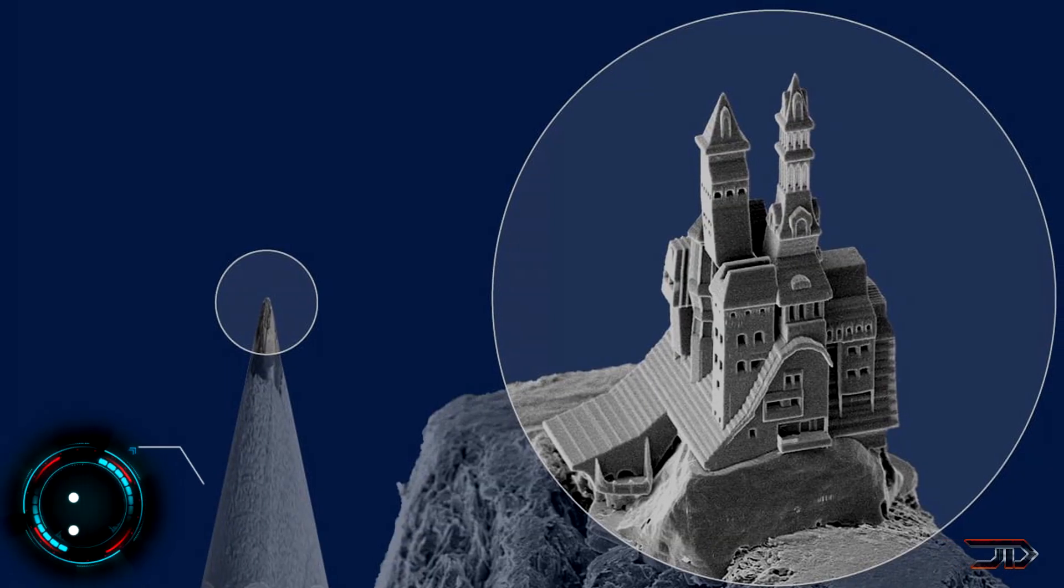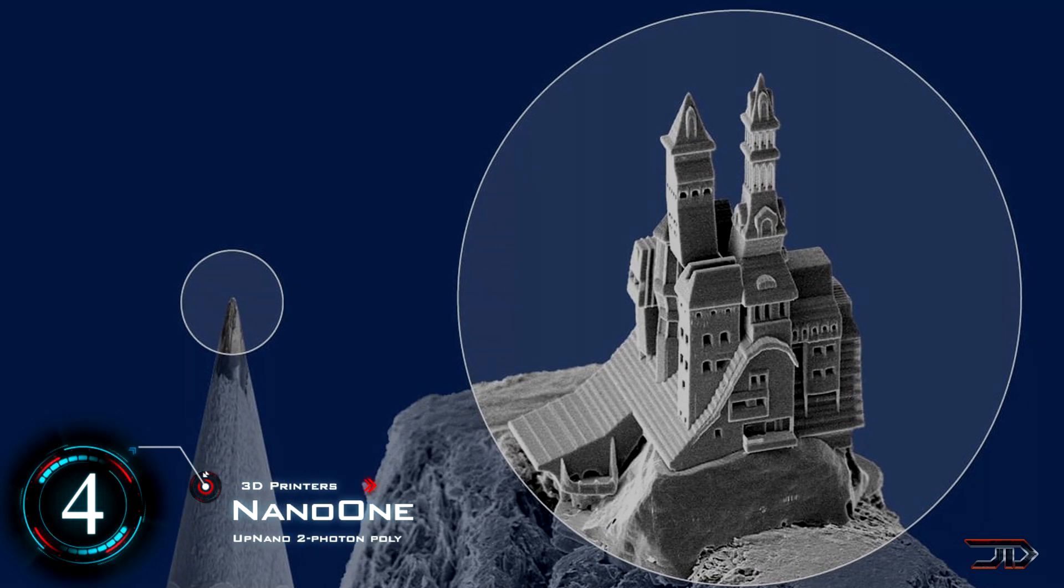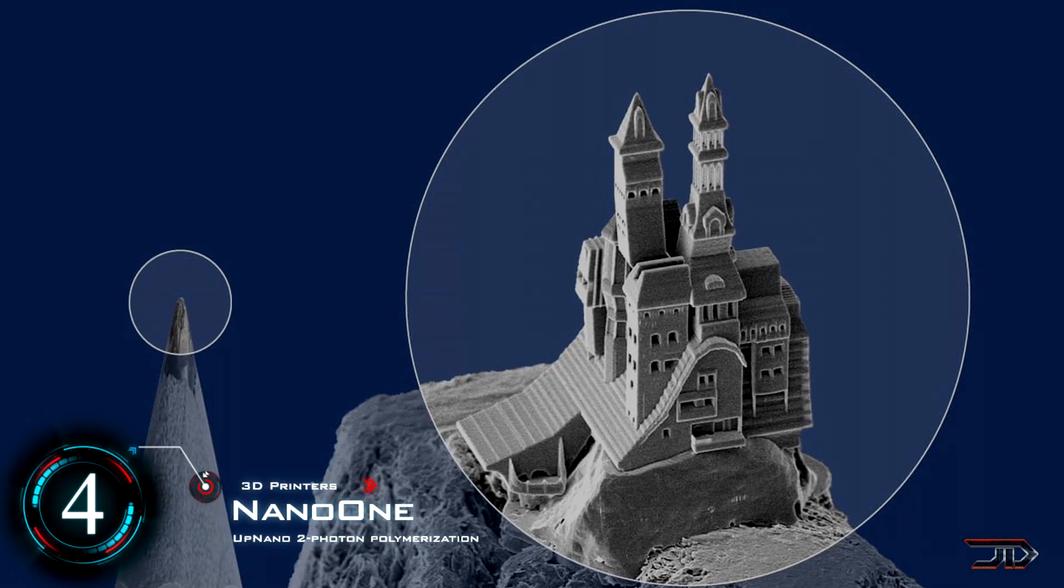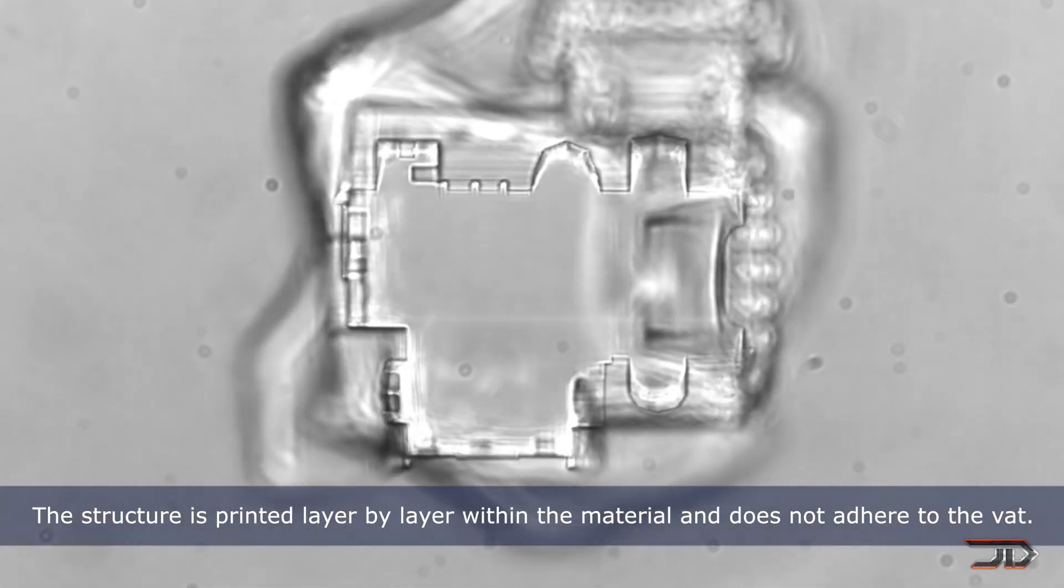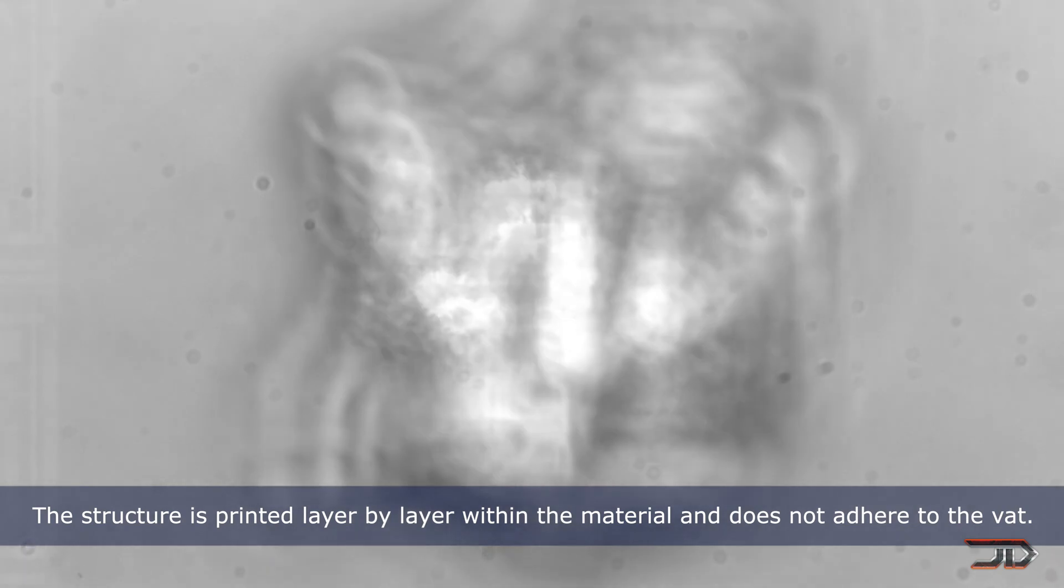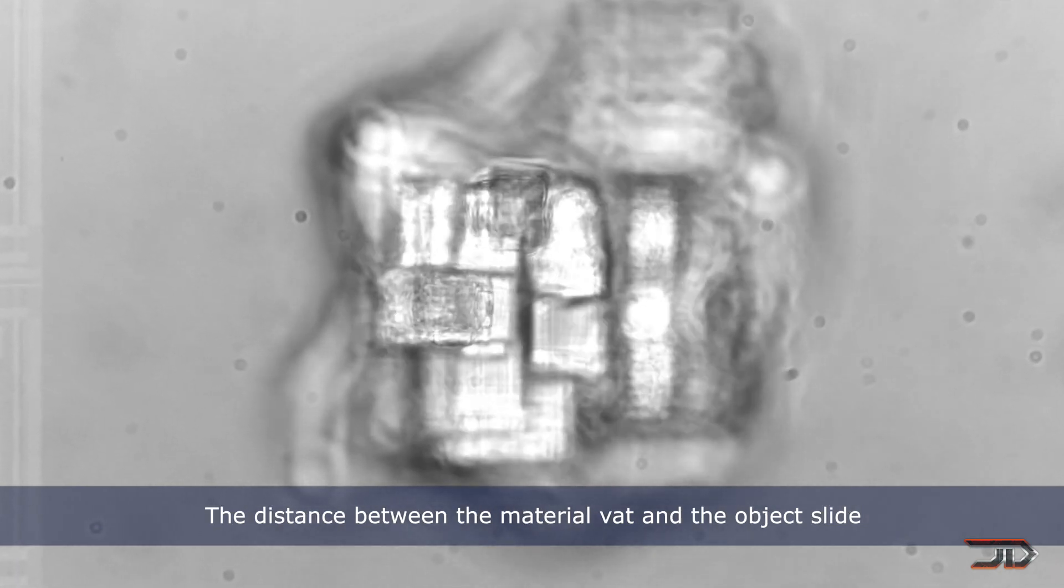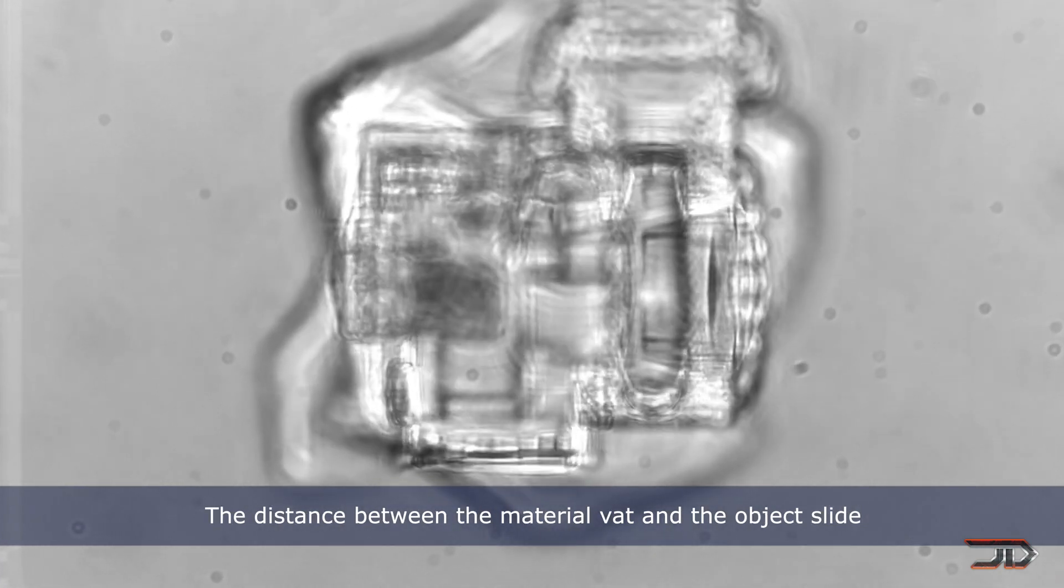At number 4, the UPnano. Now there are a few different micro 3D printers out there, and UPnano adds to this elite list. It's based on a two-photon polymerization process and it prints volumes ranging from 100 to 1000 cubic micrometers in just a few minutes.